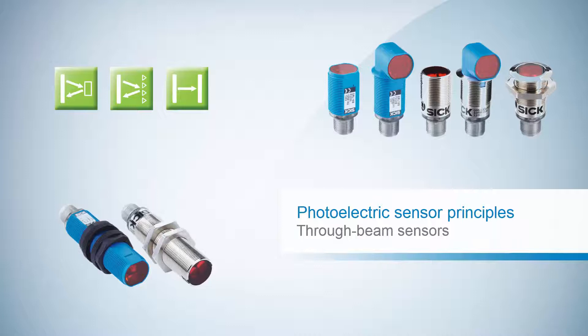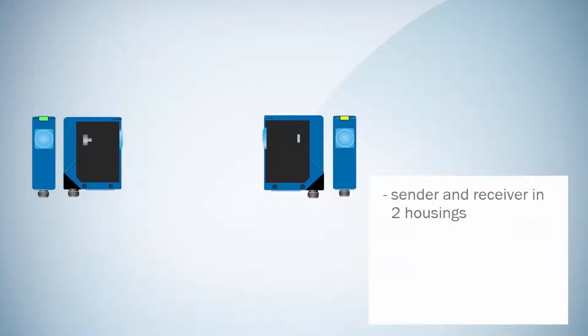Chapter 6 gives a short demonstration of through beam sensors using the GRSE18 as an example. With a through beam system, the sender and the receiver are separated into two different housings.